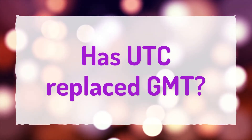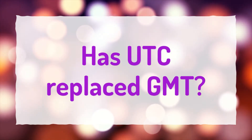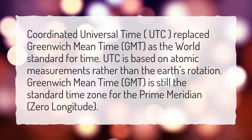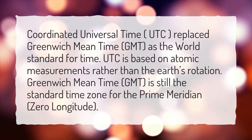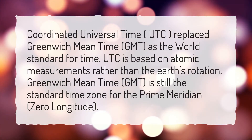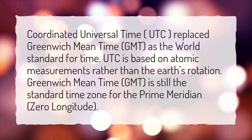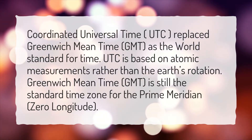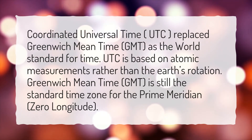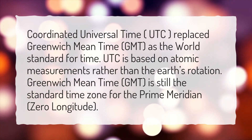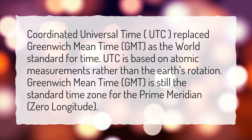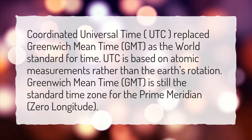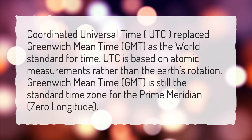Has UTC replaced GMT? Coordinated Universal Time replaced Greenwich Mean Time as the world standard for time. UTC is based on atomic measurements rather than the Earth's rotation. Greenwich Mean Time is still the standard time zone for the prime meridian, zero longitude.